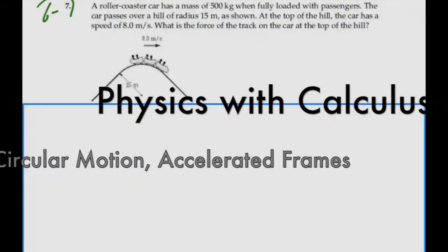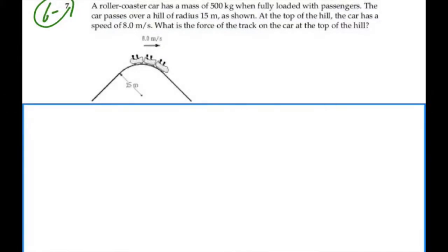Here's problem 6-7. A roller coaster car has a mass of 500 kilograms when fully loaded with passengers. The car passes over a hill of radius 15 meters as shown. At the top of the hill, the car has a speed of 8 meters per second.